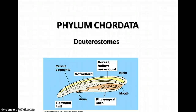The next and final phylum of animals is Phylum Chordata. These are also deuterostomes, and this is the phylum that we belong to. Most members of Phylum Chordata are vertebrates, although some are not, but they all have characteristics in common. This picture shows a generalized chordate. All chordates have a dorsal hollow nerve cord with the brain at one end, a notochord supporting that nerve cord, pharyngeal slits (which in some become gills and in others develop into other parts of the body), and a post-anal tail, along with muscle segments in the tail.